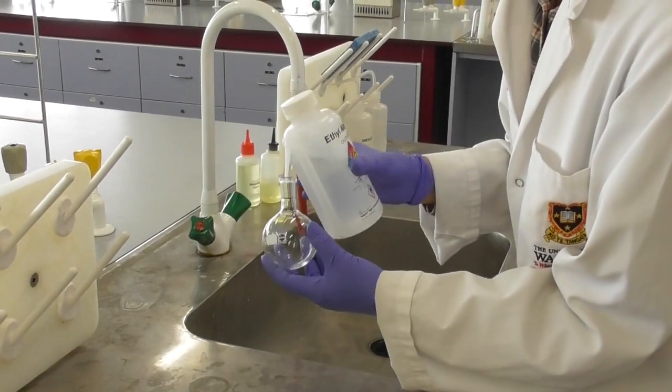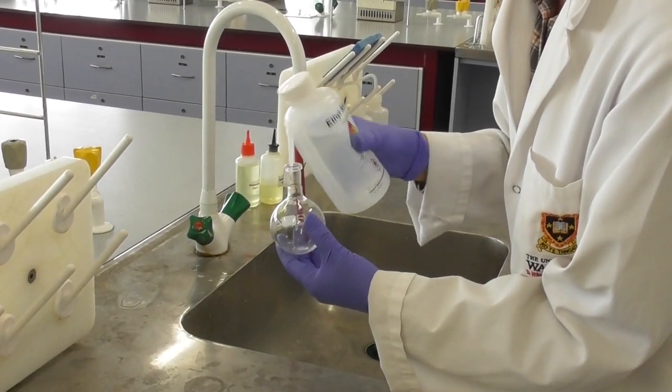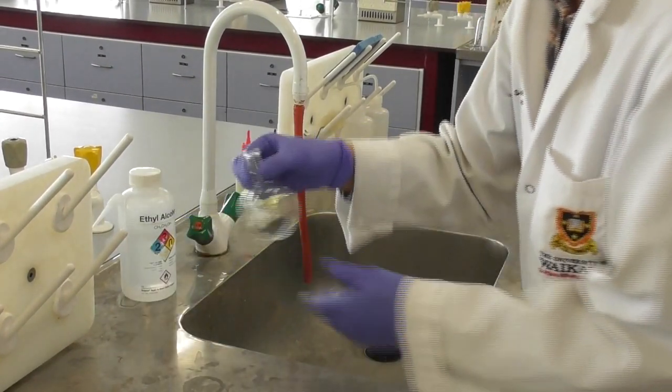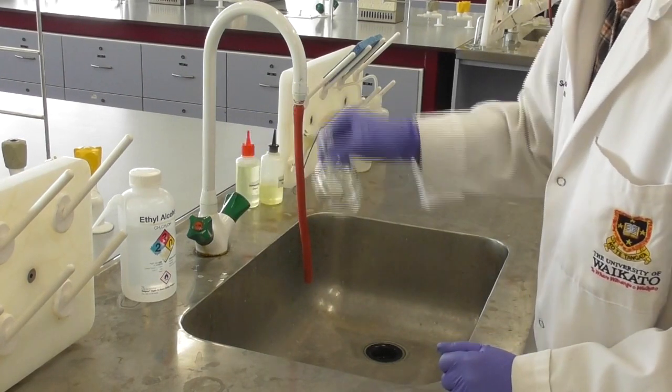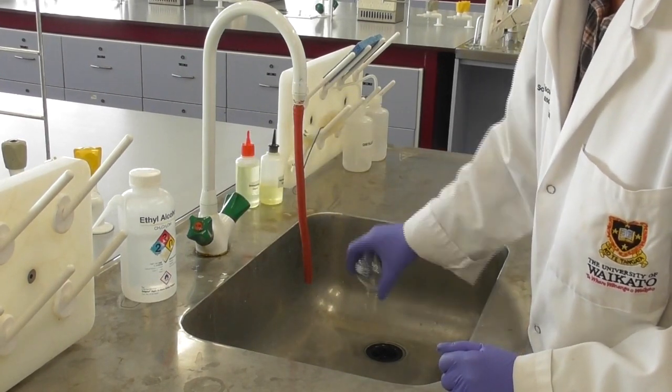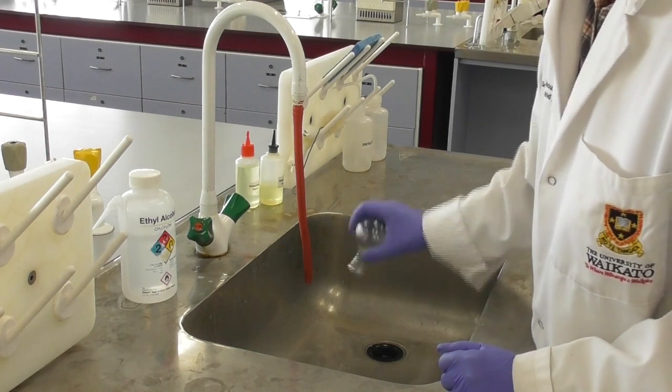We carefully rinse the round bottom flask with ethanol or acetone and then let it dry on the drying rack.